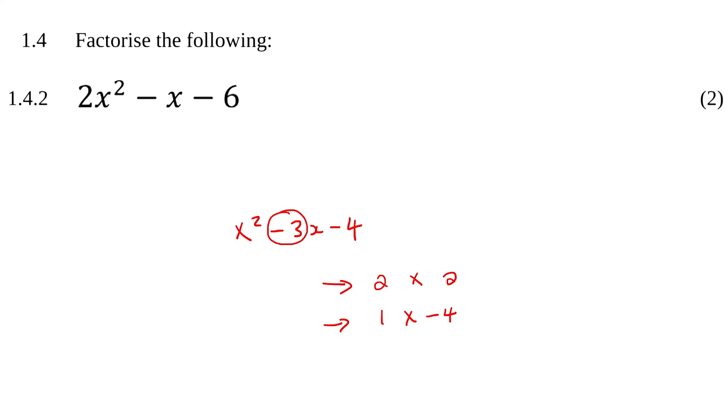For example, minus 4 plus 1, and then you just say x and x because that gives you x squared, and then you say minus 4 and plus 1. And that's how you would do it.